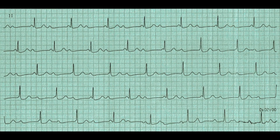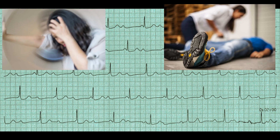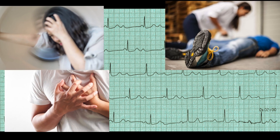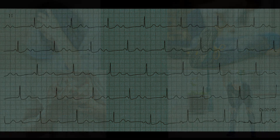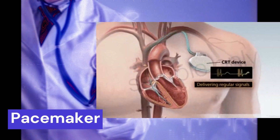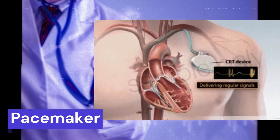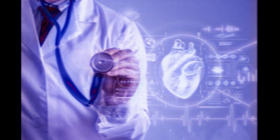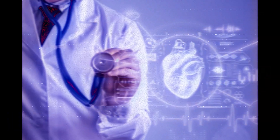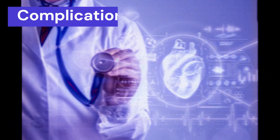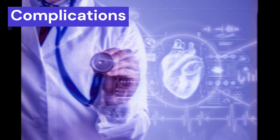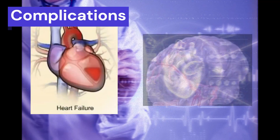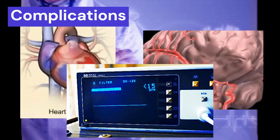Symptoms of third-degree heart block may include dizziness, fainting, chest pain, and shortness of breath. Treatment options include implantation of a pacemaker to regulate the heart rate and rhythm. Without treatment, third-degree heart block can lead to serious complications such as heart failure, stroke, or sudden cardiac arrest.